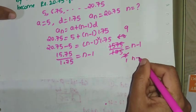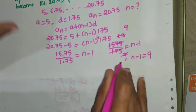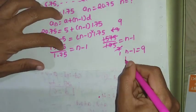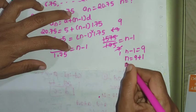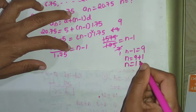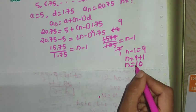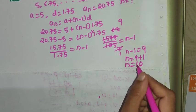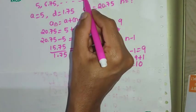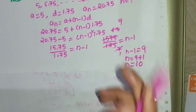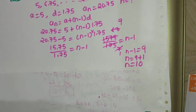So n - 1 = 9, which gives N = 9 + 1 = 10. The answer is N = 10. On the 10th week, her saving becomes Rs. 20.75.